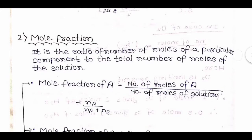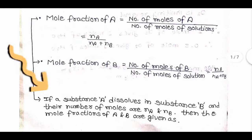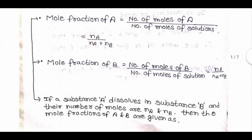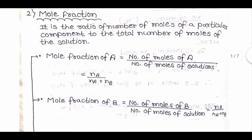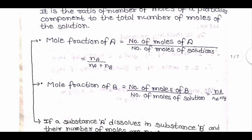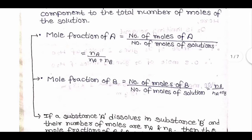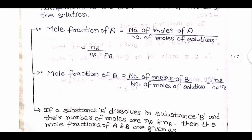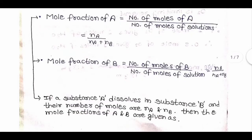Mole fraction is the ratio of the number of moles of a particular component to the total number of moles of the solution. If substance A dissolves in substance B, and their number of moles are nA and nB, then: mole fraction of A = nA / (nA + nB), and mole fraction of B = nB / (nA + nB).